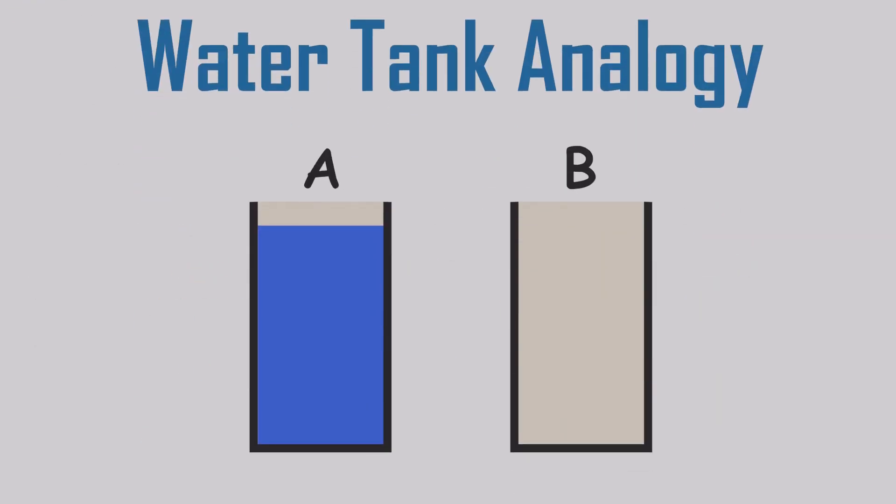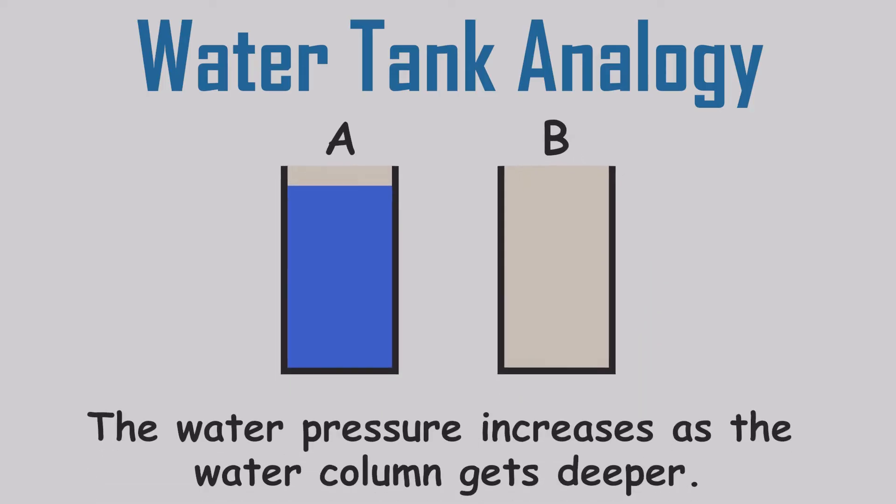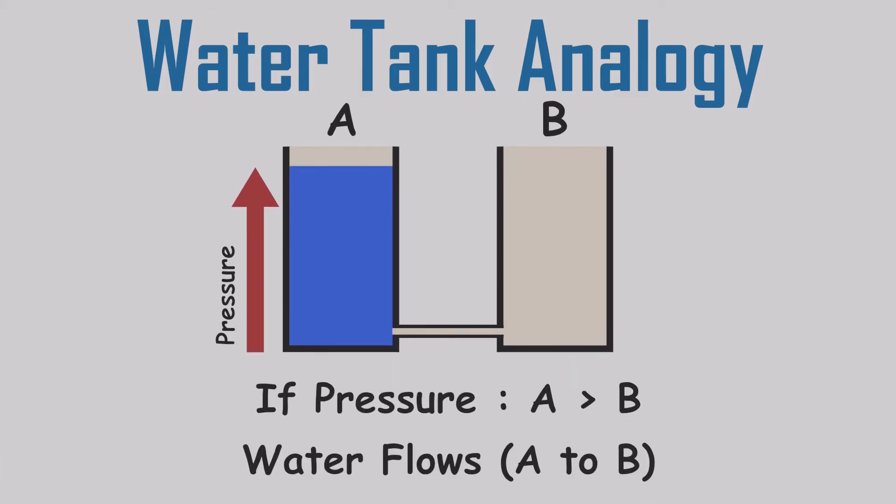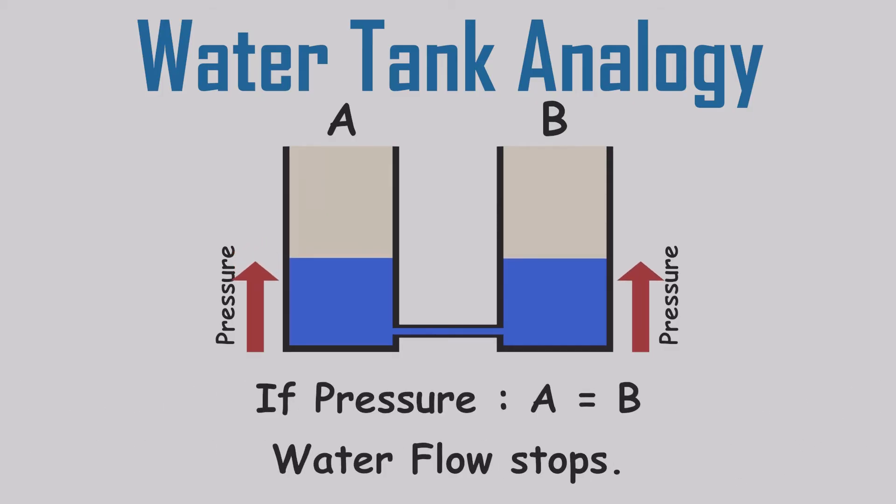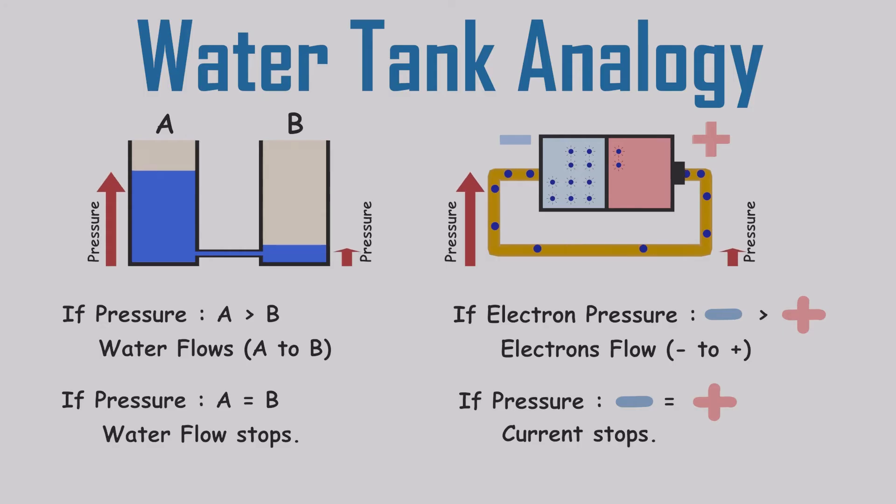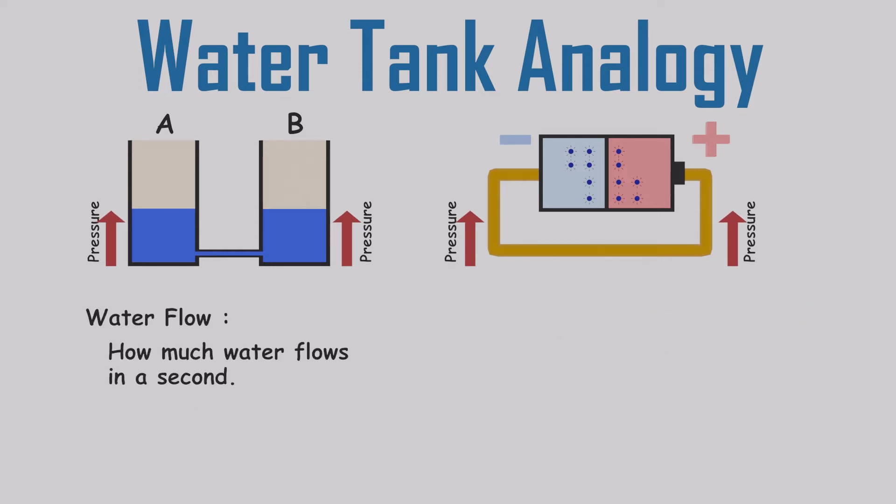The water tank analogy is a great way to make sense of electricity. Picture a water tank full of water and another tank that's empty. The water pressure increases as the water column gets deeper. Tank A has high water pressure and tank B has low water pressure. If we connect the two tanks using a water pipe, the water flows from tank A to tank B. The water pressure of tank A is gradually decreasing and the pressure of tank B is gradually increasing. After some time, the pressure of both tanks became equal, then the water flow stops. This is what happens in the battery.